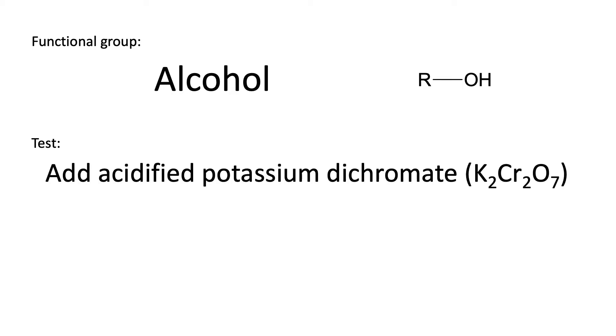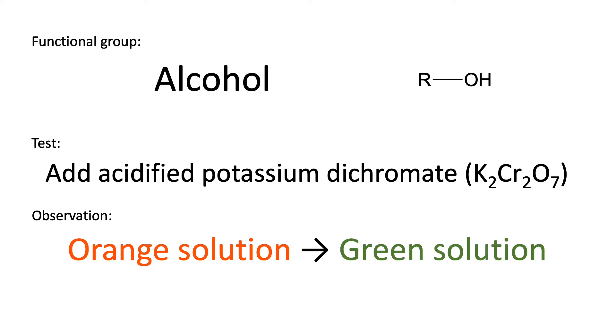The next functional group is the alcohol group. The test here is to add acidified potassium dichromate. Now we have come across the oxidation of alcohols using acidified potassium dichromate but this can also be used to test for the presence of an alcohol. The observation that we will make if we have an alcohol present is that our orange acidified potassium dichromate will turn into a green coloured solution.